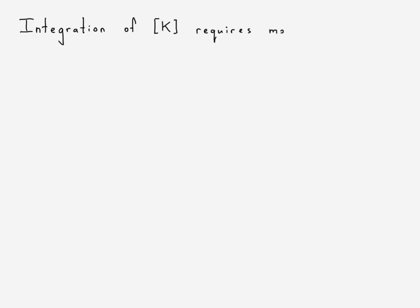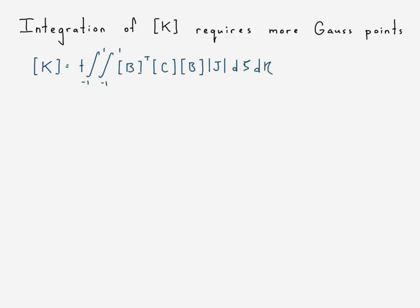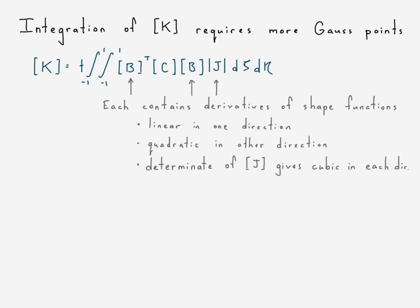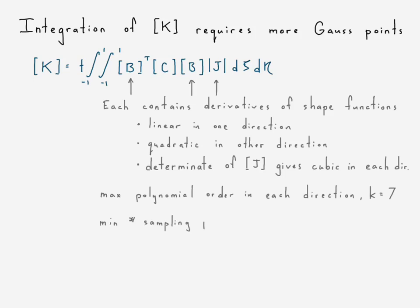Since we have quadratic shape functions, we need more Gauss points. The strain-displacement matrix and the determinant of the Jacobian contain derivatives of the shape functions, which will be linear in one direction and quadratic in the other. The Jacobian determinant will give a cubic in each direction. The maximum possible polynomial order could be seventh order, so using the theory of Gauss quadrature we would need at least four sampling points in each direction for a 100% accurate solution.